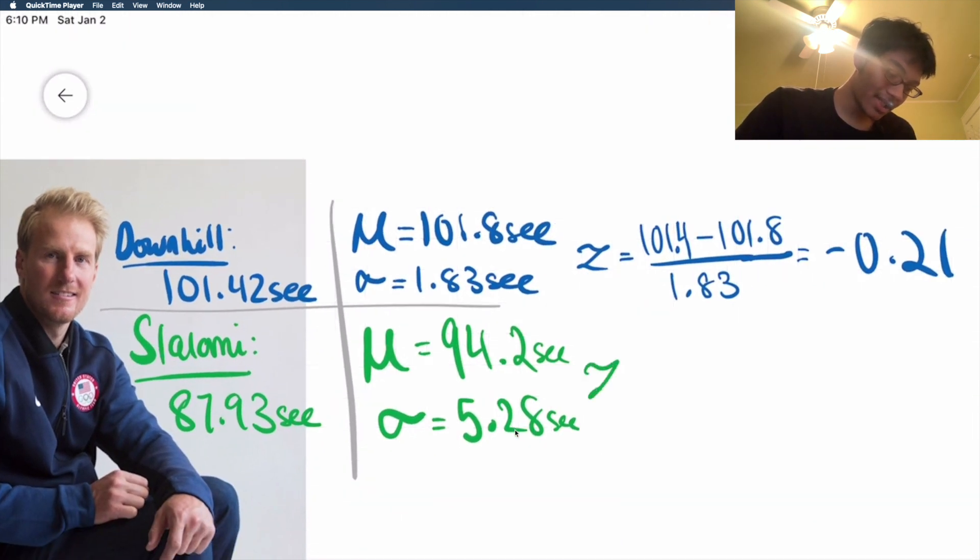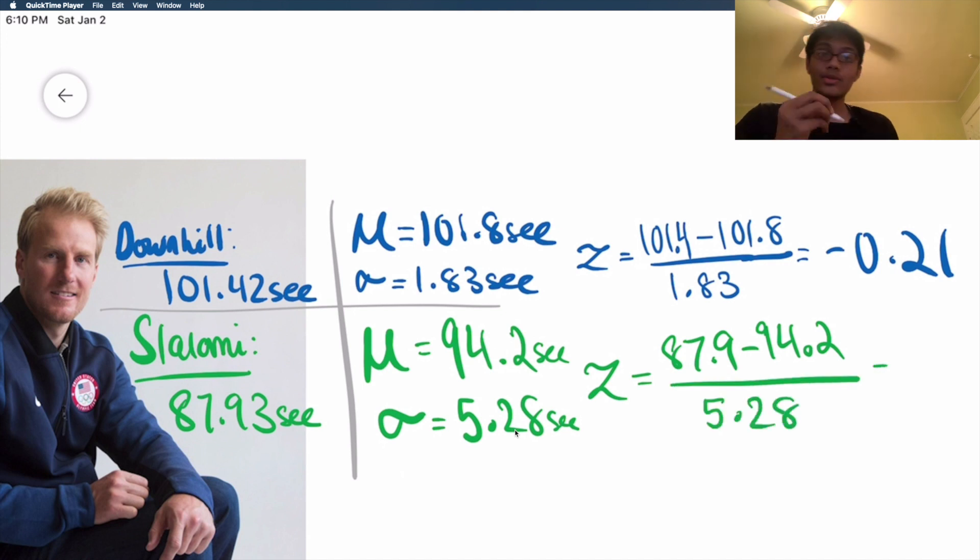So with that being said, let's compute Ted's z-score for Slalomi racing. His z-score is going to be his data value of 87.93, I'll just write 87.9, minus the average time which is 94.2, divided by the standard deviation of 5.28. Calculate that out and you're going to get the z-score of minus 1.2.